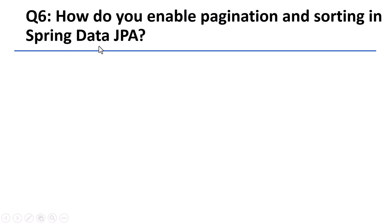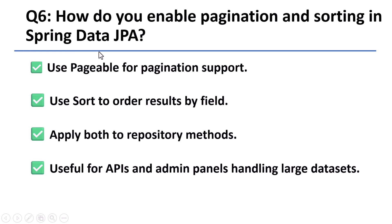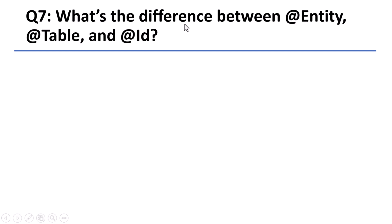It behaves similarly to getOne by loading data lazily when the proxy is accessed. Question 6: How do you enable pagination and sorting in Spring Data JPA? Spring Data JPA provides built-in support for pagination and sorting using two interfaces — Pageable and Sort. You can pass these objects as parameters to your repository methods, making it easy to retrieve a specific page of data or sort results by any field.